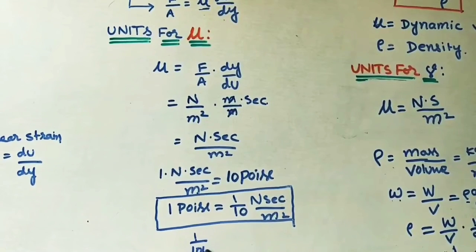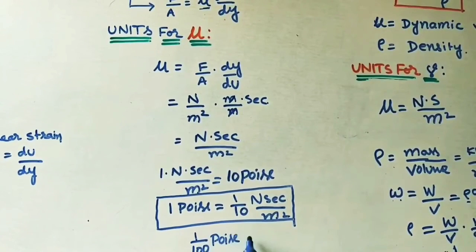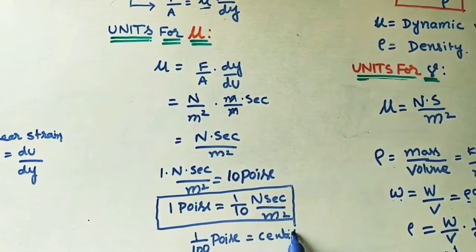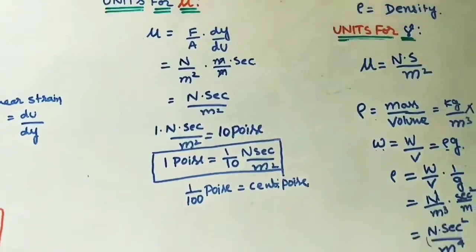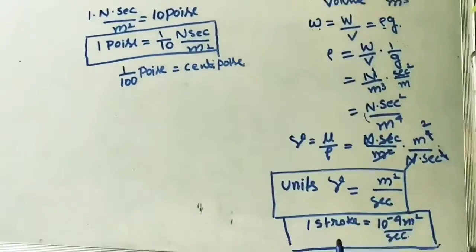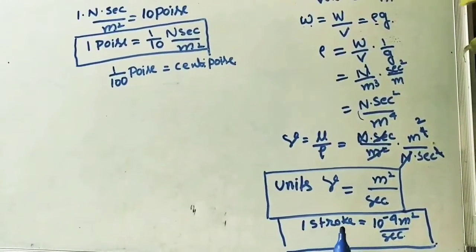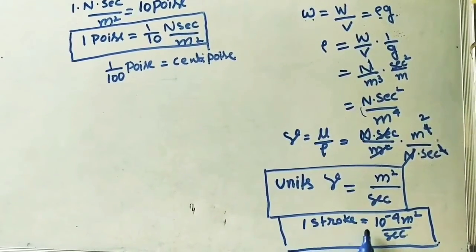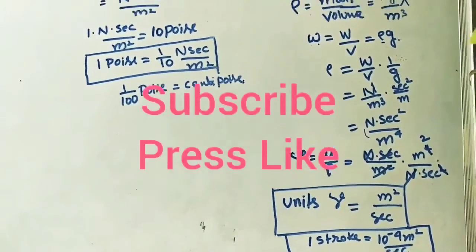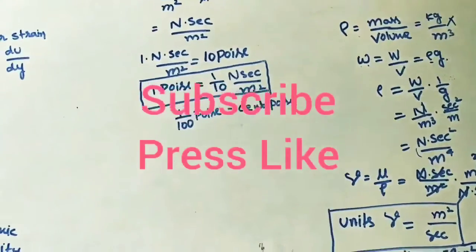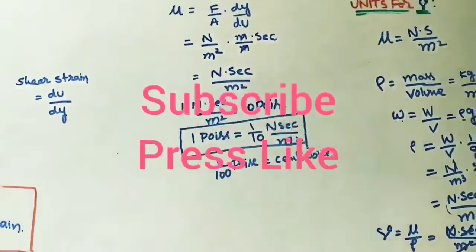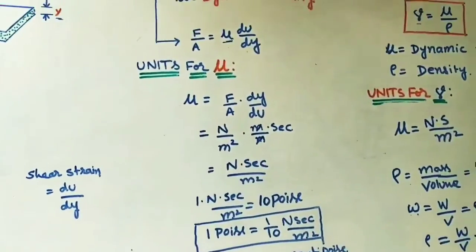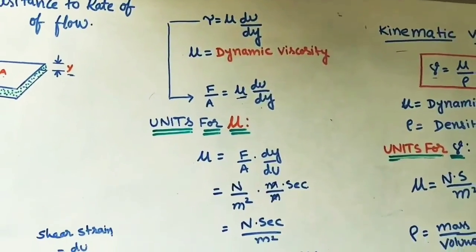They sometimes also give centipoise: 1 centipoise = 1/100 poise. Similarly, 1 centistoke = 1/100 Stoke, and 1 millistroke = 1/1000 Stoke. Remember the names Stoke and Poise during viscosity calculations.